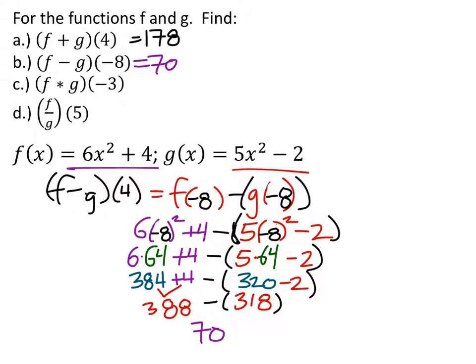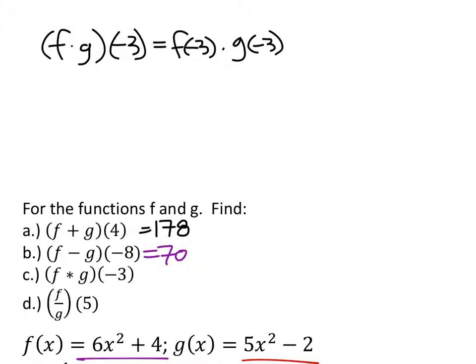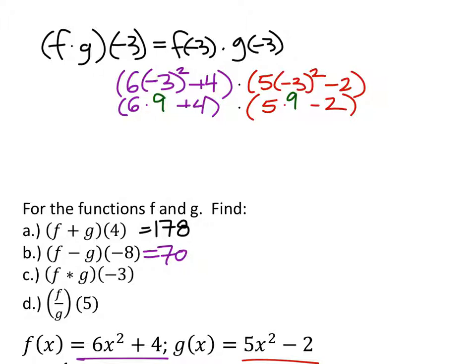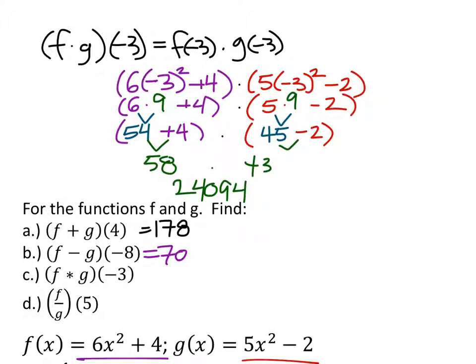F times G of negative 3. Is everyone okay with this part? Just kind of transformed it or translated it. And I've got F of negative 3, which is 6X squared plus 4, but I'm replacing the X with negative 3, times G of negative 3, which is 5X squared minus 2, but I'm replacing the X with negative 3 again. So by the order of operations, negative 3 squared first, that gives us 9 in both cases. And now in the parentheses, I'd be looking at multiplication for both. And then finally, we'll do the addition. So I end up with 58 times 43, which is a big number. Did I write that right?